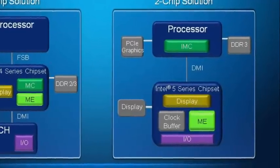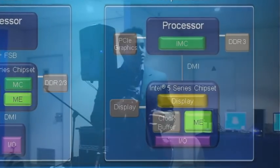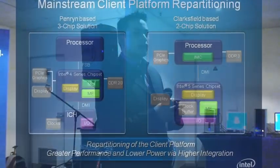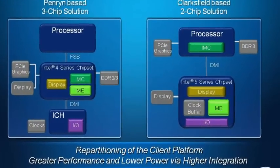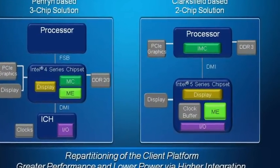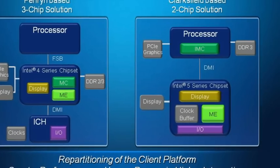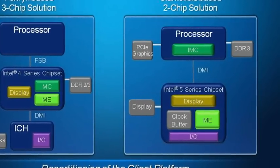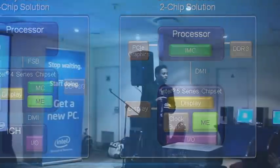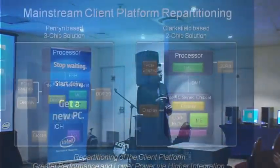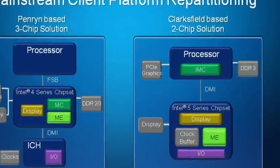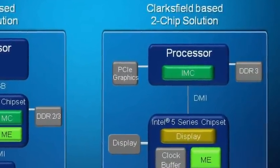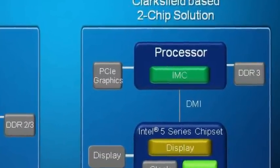Why is the two-chip design better? It allows manufacturers to reduce the bill of materials and do more with less, reaching different market segments. Going from a three-chip to a two-chip design means form factors become smaller. Key components include moving the memory controller into the CPU, and also integrating the PCI graphics into the CPU as well.